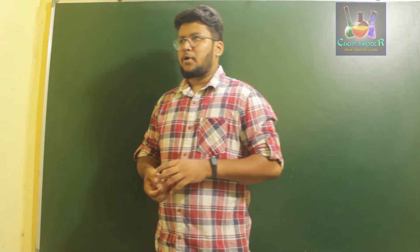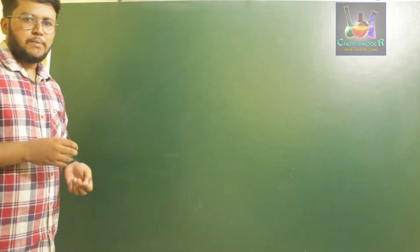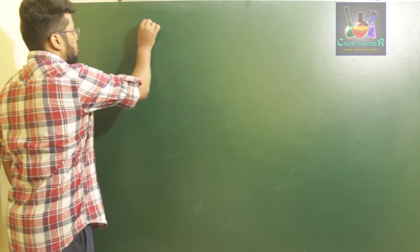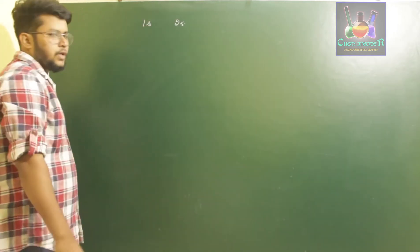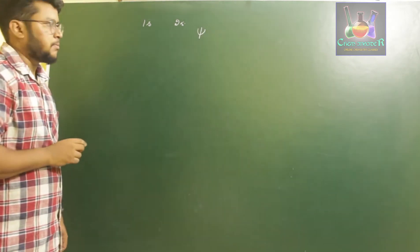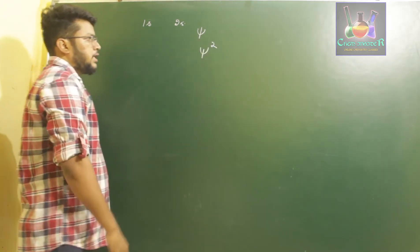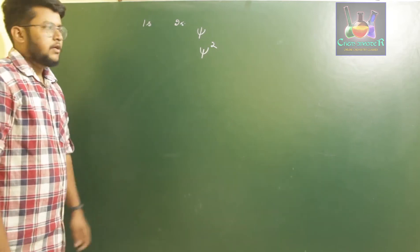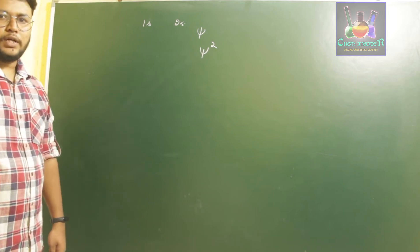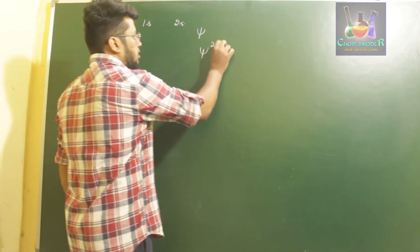We are going to understand the probability of finding an electron in the S, P, D, and F subshells. The probability of finding an electron is denoted by the symbol psi — psi is the wave function for atomic orbital, and psi-square is the probability density.